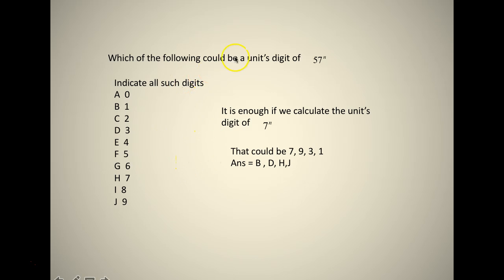Coming to a problem on number theory: which of the following could be a units digit of 57 raised to n? Indicate all such digits. We just look at the units digit of 7 raised to n.